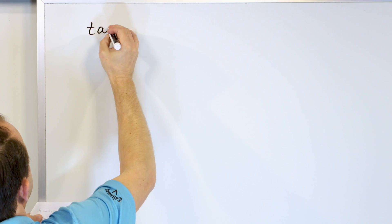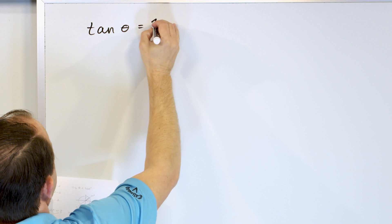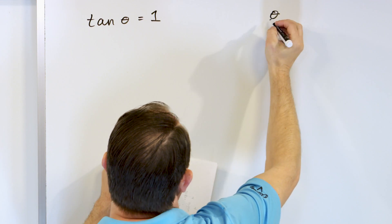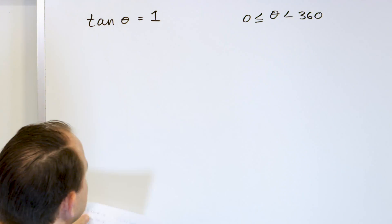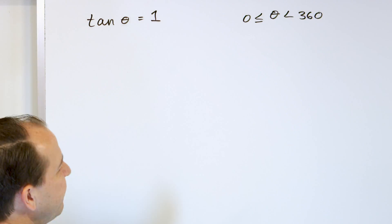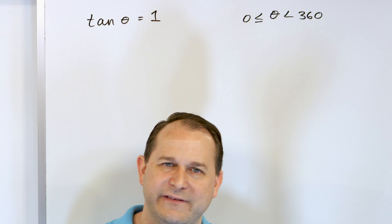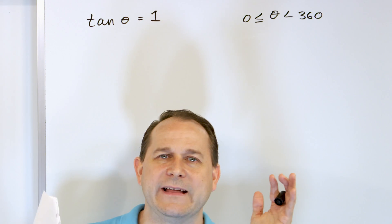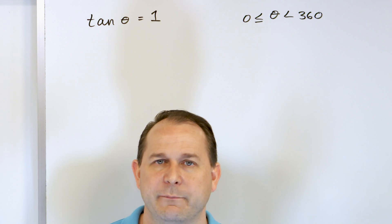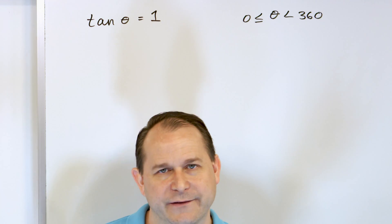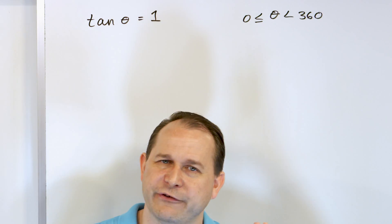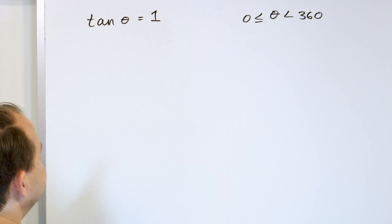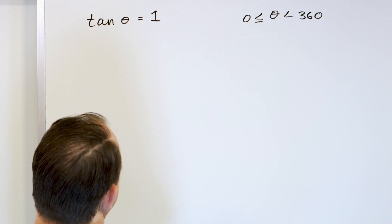Let's look at the next one: the tangent of theta equals one, with theta between zero and 360. For this lesson, all ranges of theta will be the full circle, but just know that in other equations the range might be only zero to 90 or zero to 180. Here we're just starting, so we choose the entire unit circle. Tell me all angles in the unit circle where the tangent of the angle is one.